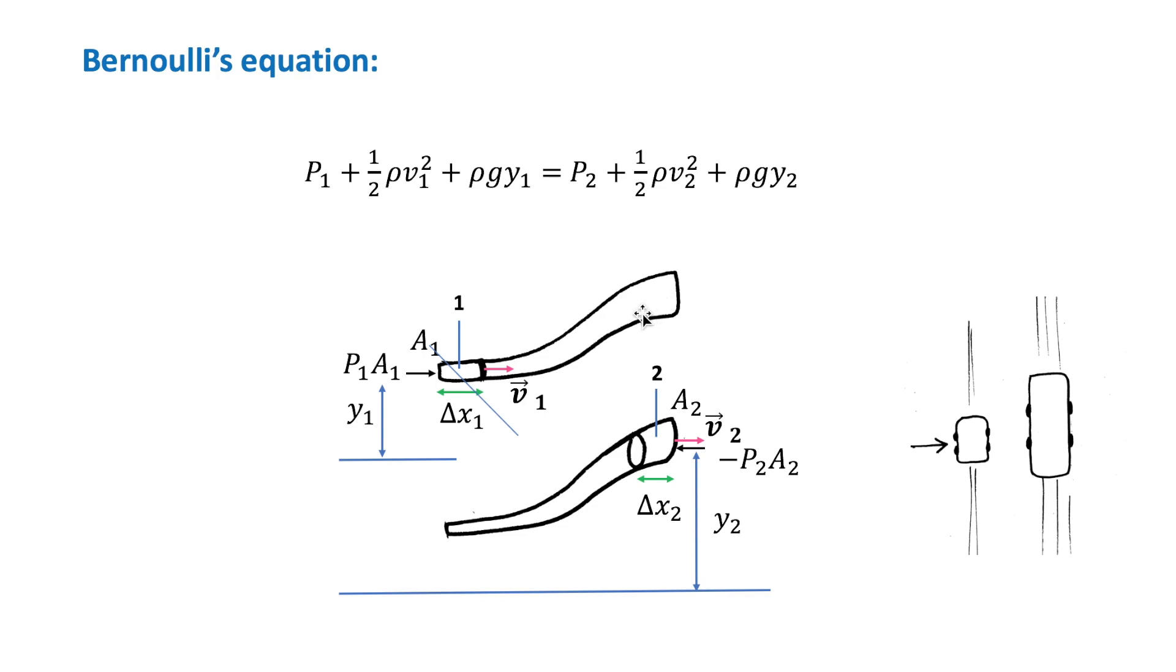This behavior applies also for gas. For example, imagine a fast-moving truck passing a car. Since the space between the car and the truck is narrow, then according to the continuity equation, the speed of the air is higher there. The speed of the air is higher. So, according to Bernoulli's equation, the pressure of this high-speed air is lower than at the other side of the car, where the air is slower, here.